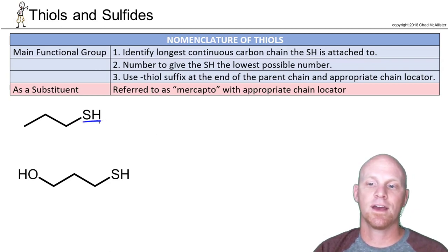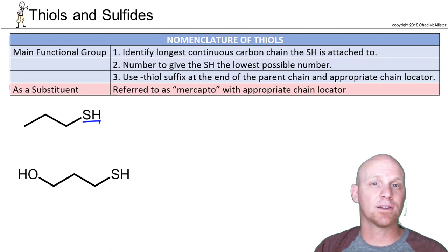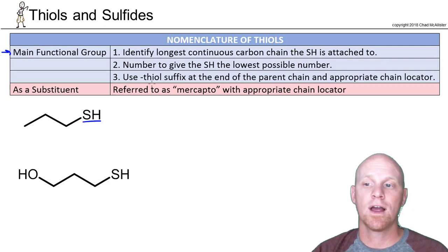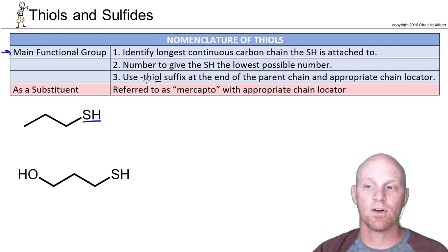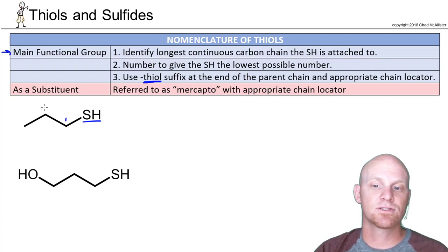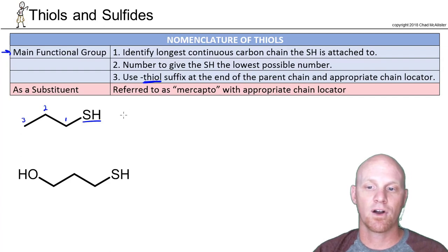A thiol has an SH group. It looks like an alcohol — it's just the sulfur analog of an alcohol. As the main functional group, we name them very similarly to an alcohol, just instead of the simple '-ol' suffix we'd see in an alcohol, we use the entire '-thiol' suffix. The first thing you'll do is number the longest chain the SH is attached to, to give the SH the lowest possible number. Here it's attached to carbon number one.